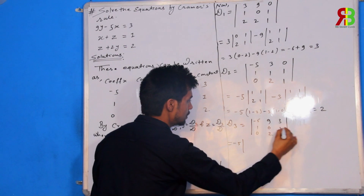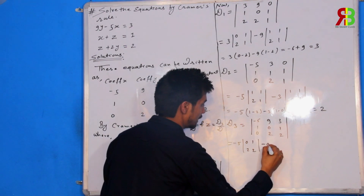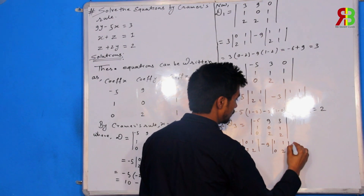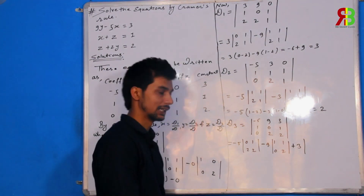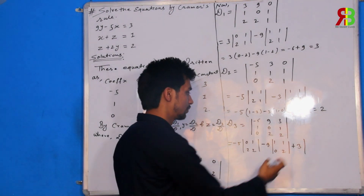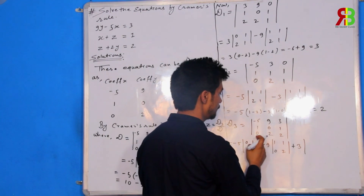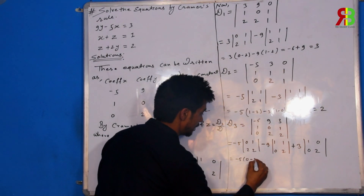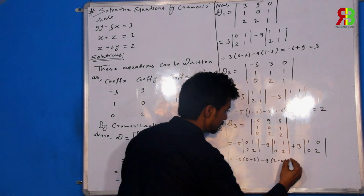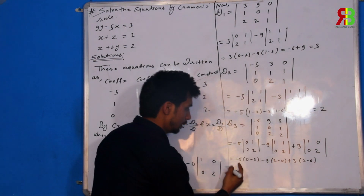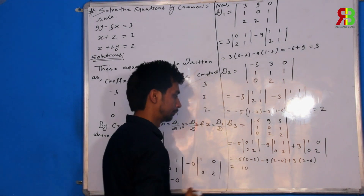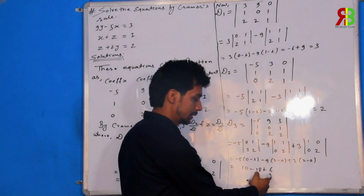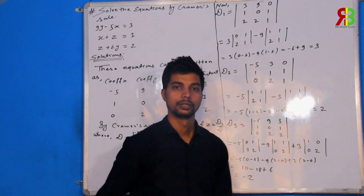Minus 5, 0, 1, 2, 2. Minus 9. Column row, go here: 1, 1, 0, 2, 1, 1, 0, 2. Plus 3. 1, 1, 0, 2, plus 3. Now we have 0, so you have 3. This column row: 1, 0, 0, 2. 1, 0, 0, 2. Minus 5, 0 minus 2. Minus 9. 2 minus 0, plus 3. 2 minus 0. Minus 5 into minus 2. 10 minus 9 into 2, 18. Plus 6, 10, 6, 16. 16 minus 18, minus 2. So d, d1, d2.